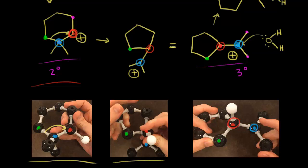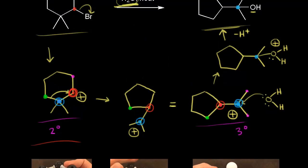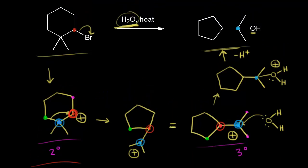Let's look at the entire mechanism. The first step is loss of our leaving group. Then we get a carbocation rearrangement going from a secondary carbocation to a tertiary carbocation. The next step is nucleophilic attack where the water molecule attacks our positive charge. And finally we have an acid-base reaction — we remove one of the protons to form our product.